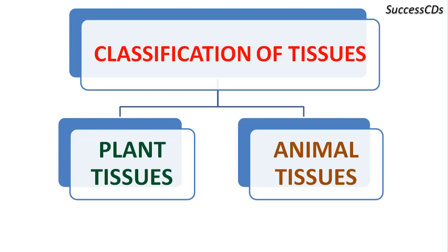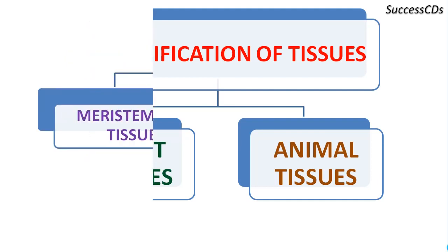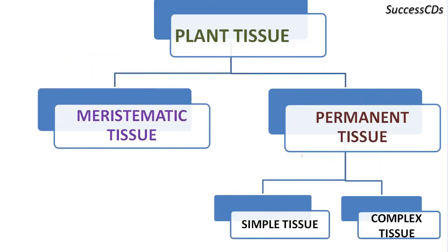In this video, we will discuss plant tissues in detail. Plant tissues are classified into meristematic tissue and permanent tissue. Permanent tissue is further classified into simple permanent tissue and complex permanent tissue.